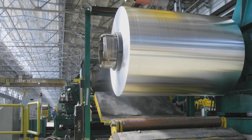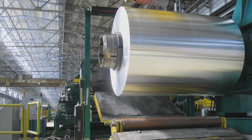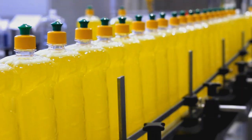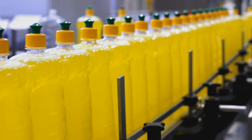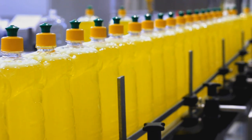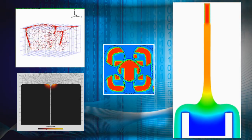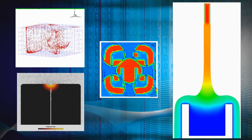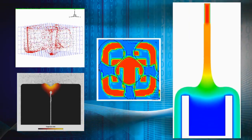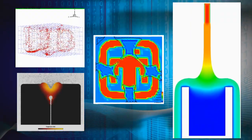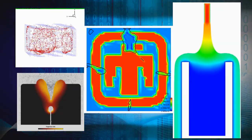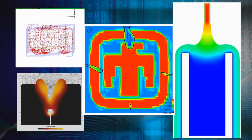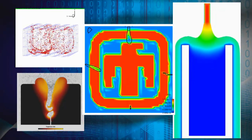Ever wonder how they make plastic wrap perfectly thin and even, or how they get the detergent into the bottle? Well, it takes rocket science — the rocket science that comes from Sandia National Laboratories' extensive work in modeling and simulation.